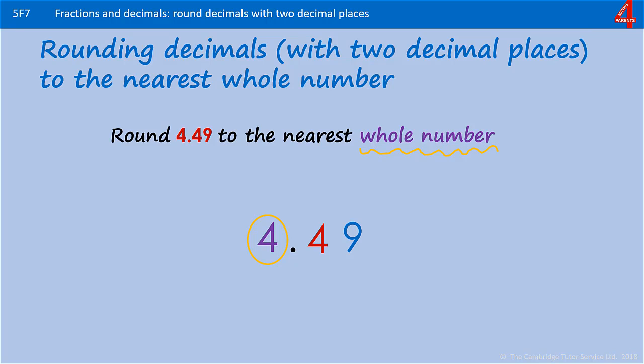We have 4 in the tenths column. We don't need to worry about what's in the hundredths. If you're rounding to the nearest whole number, you're looking at the tenths column. Whatever's in the hundredths won't make any difference. Because there are 4 in the tenths column and anything 0.4 or smaller means we round down, the whole number will remain as 4.